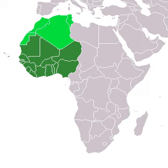Portuguese traders began establishing settlements along the coast in 1445, followed by the French, British, Spanish, Danish and Dutch. The African slave trade began not long after, which over the following centuries would debilitate the region's economy and population. The slave trade also encouraged the formation of states such as the Asante Empire, Bambara Empire and Dahomey, whose economic activities included exchanging slaves for European firearms.